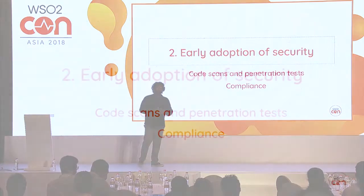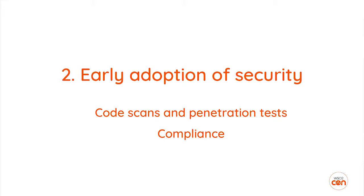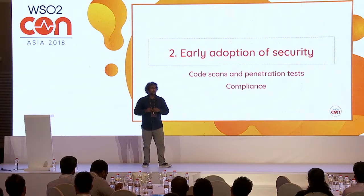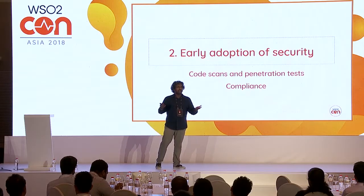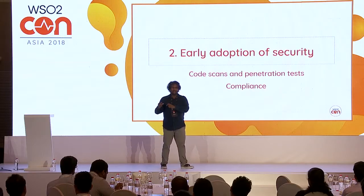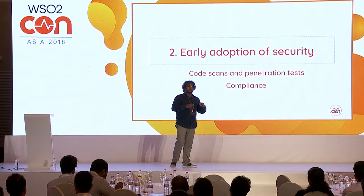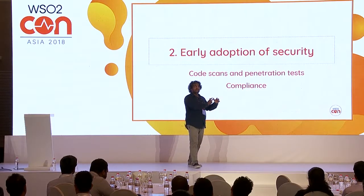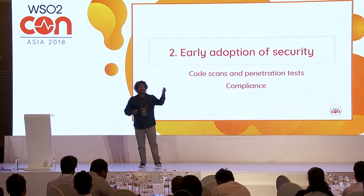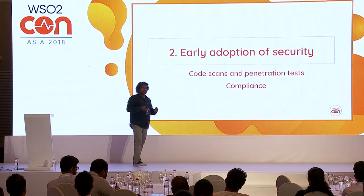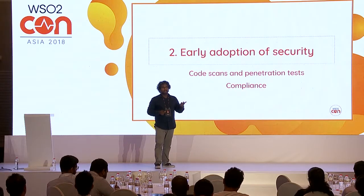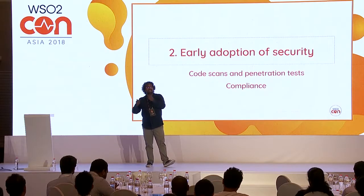Number two: security. You cannot afford sending vulnerable code into production for any reason — that is something no one can afford. When building a pipeline, you need to adopt security best practices in very early stages. You can integrate code scan suites, penetration test suites, and make sure the changes you deliver are always safe and secure and do not bring any harm into your production setup.